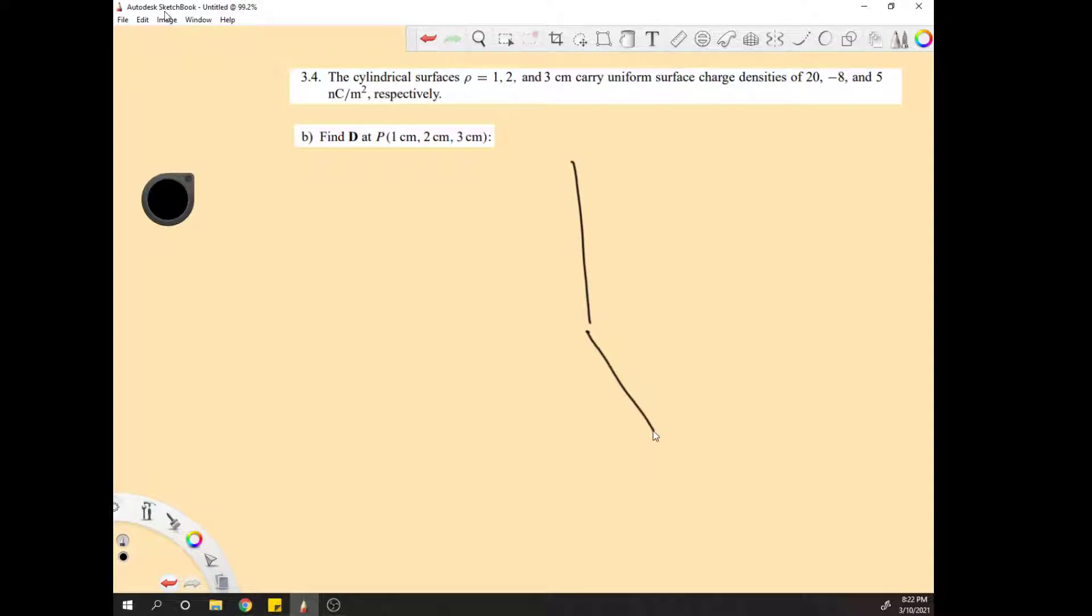So our problem looks something like this in three dimensions. You're gonna have three infinite cylinders, and then you have some point out here. We want to know what the flux looks like, how the flux is affected. And obviously this is very confusing to look at like this from the z-axis, so we're going to switch down to the xy plane as if we're looking down the xy plane.